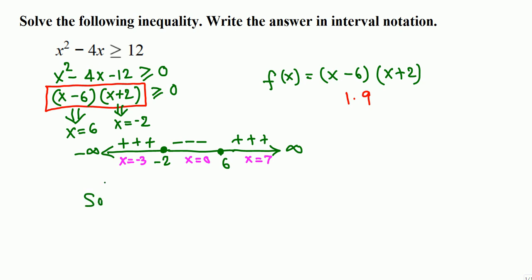So the solution is negative infinity. Never use bracket for infinity or negative infinity. Parentheses, negative infinity through negative 2. It's bigger than or equal to and we have dot, so bracket. And 6 through all the way, again dot that means bracket. This is included.